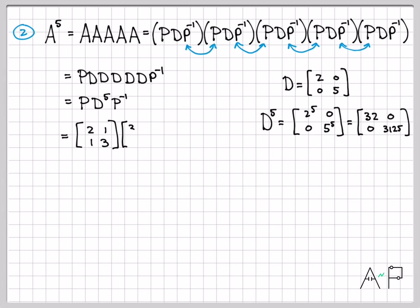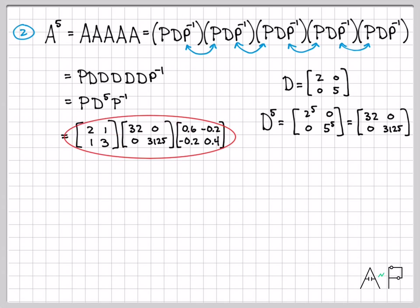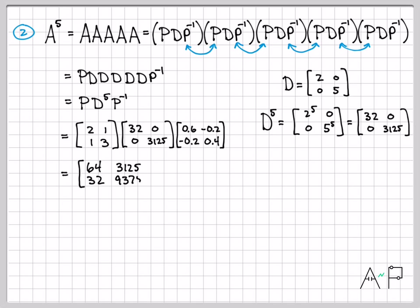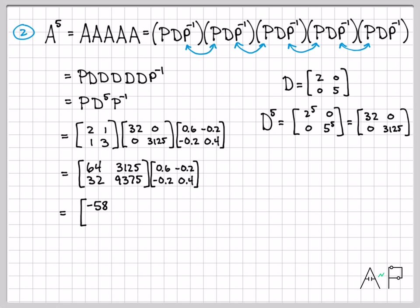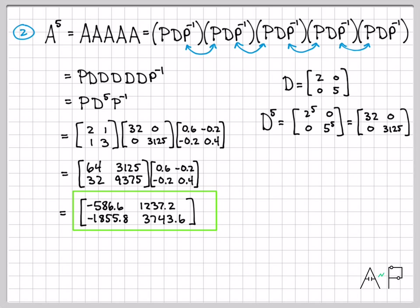We can write out P, D to the fifth, and P inverse. This is now a much simpler computation — not nearly as bad as the brute force approach if done by hand. Multiplying P and D to the fifth together gives one intermediate matrix, and then multiplying by P inverse gives the final answer.